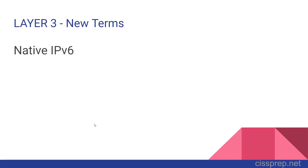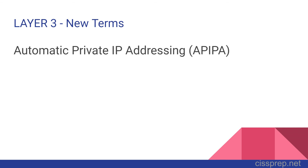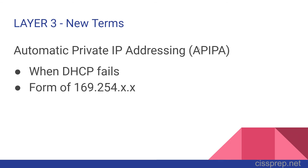Continuing on with more terms in Domain 4. Native IPv6 requires complete conversion of all internal network segments and components, including software, to IPv6. Dual stack uses specialized devices that can handle both protocols. IPv6 at the edge means all publicly-facing content and resources are accessible to either IPv4 or IPv6. Automatic private IP addressing, or APIPA, is reserved for when DHCP fails — addresses are in the form 169.254.x.x, which are Class B. It provides limited connectivity until DHCP becomes available again.